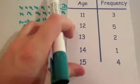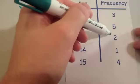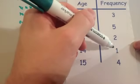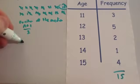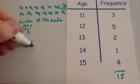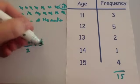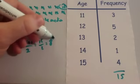So if we add up all the numbers, you've got 3, 8, 10, 11, 15. So you've got 15 people all together. So you do 15 plus 1 divided by 2. So that's 16 divided by 2, which equals the 8th person.